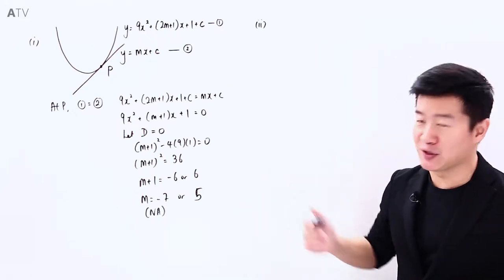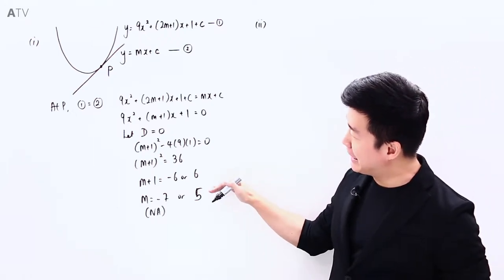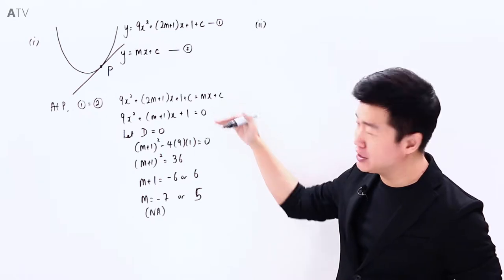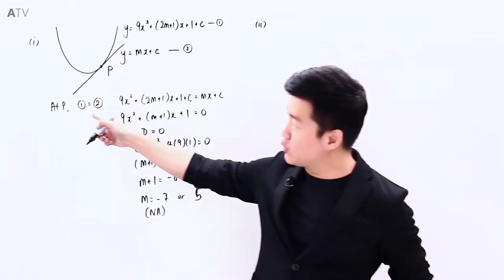We have found from the previous part that m is equal to 5. So substituting m equals 5 back into this equation here should help me solve for the x-coordinate of P.